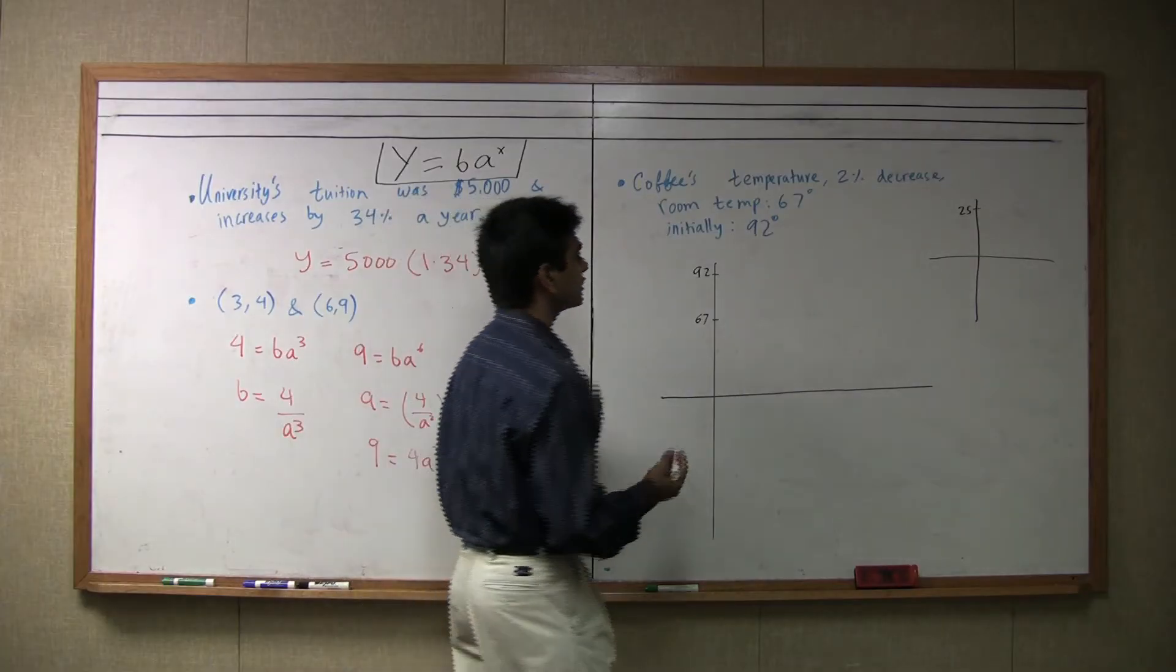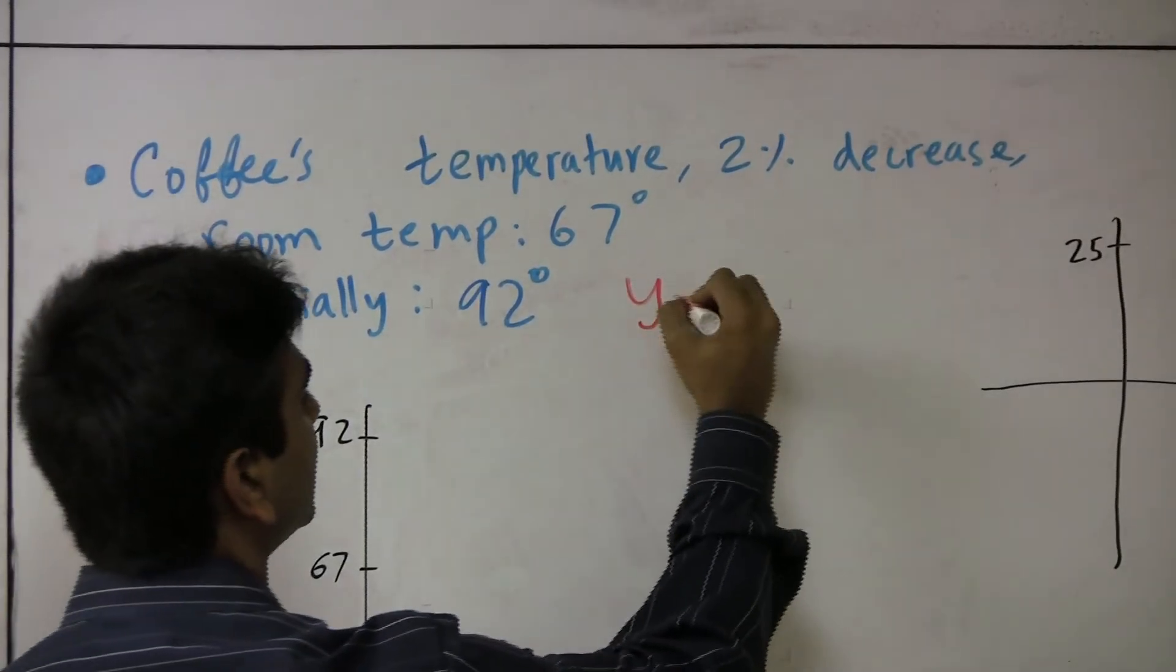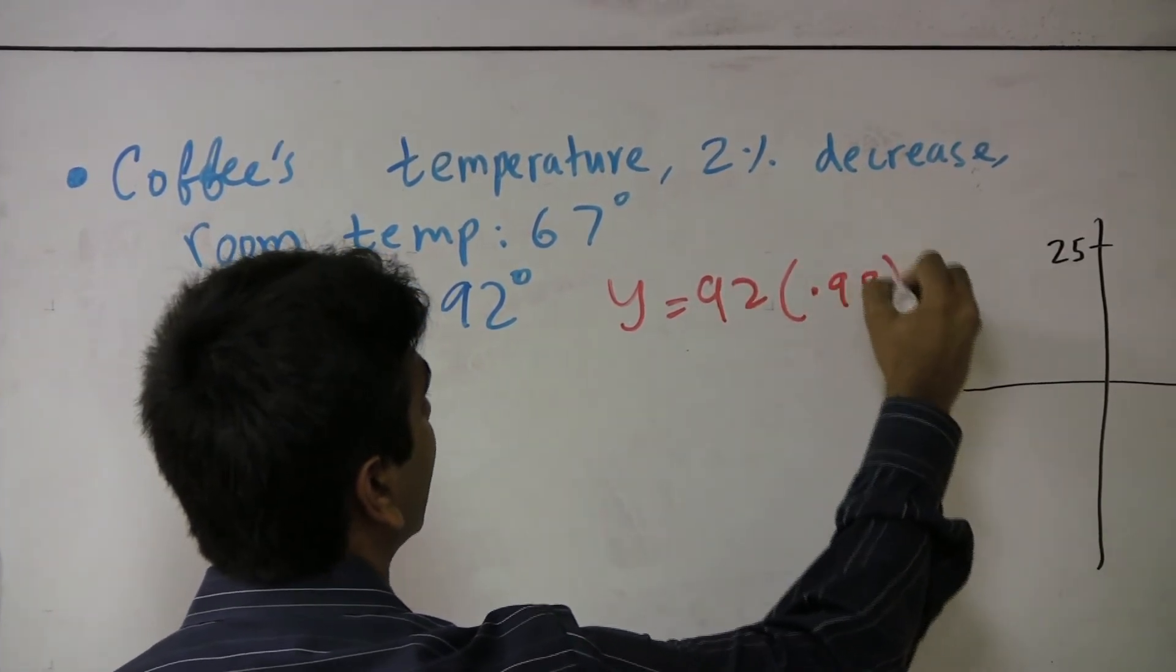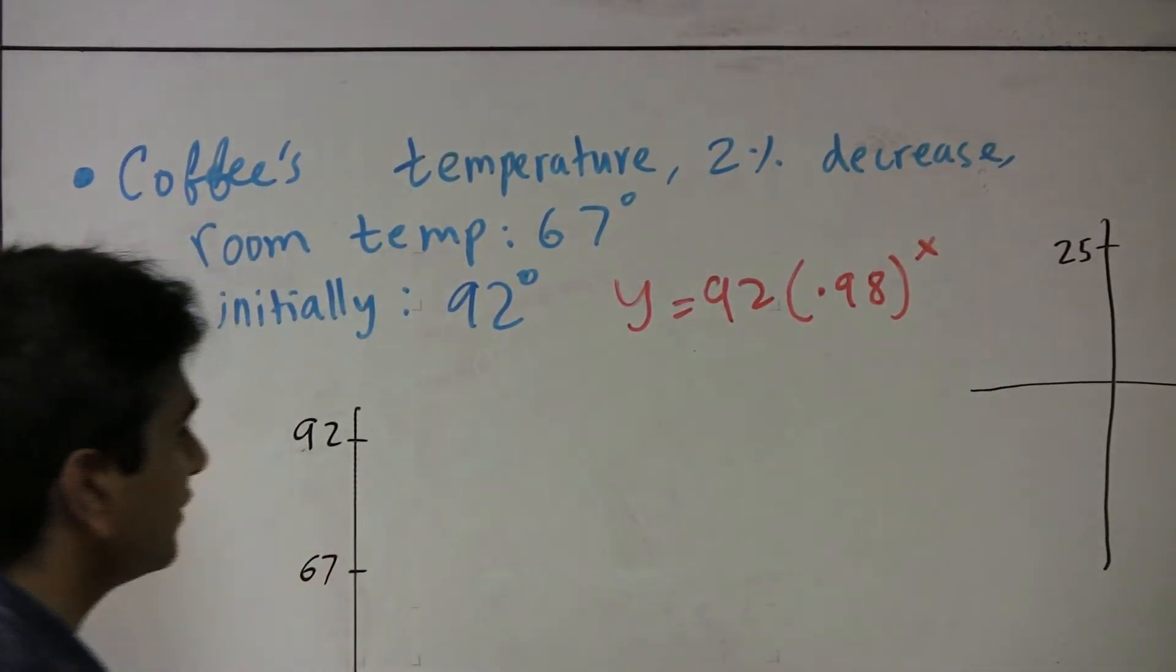Now, your initial thought might be, let's just say y equals 92 times .98 to the x. This seems to fit with what we've learned so far.